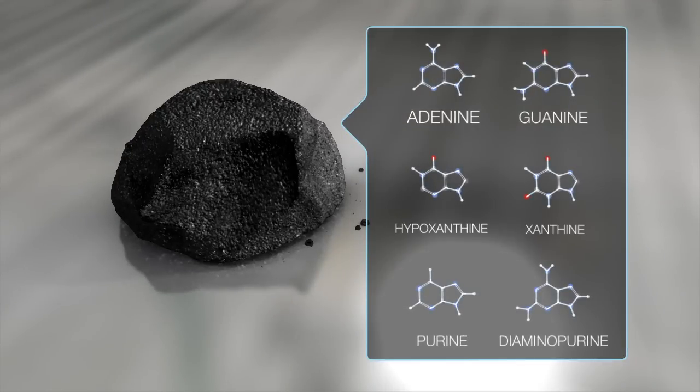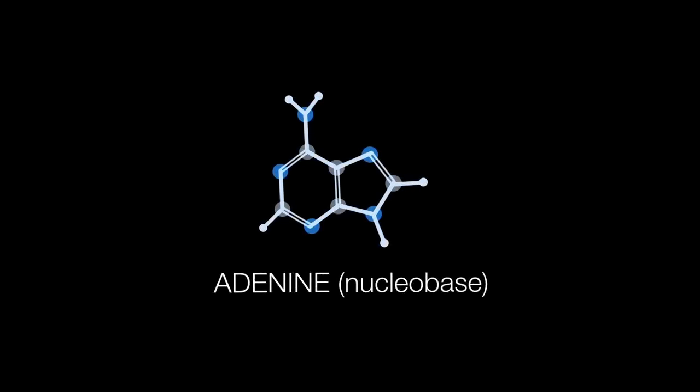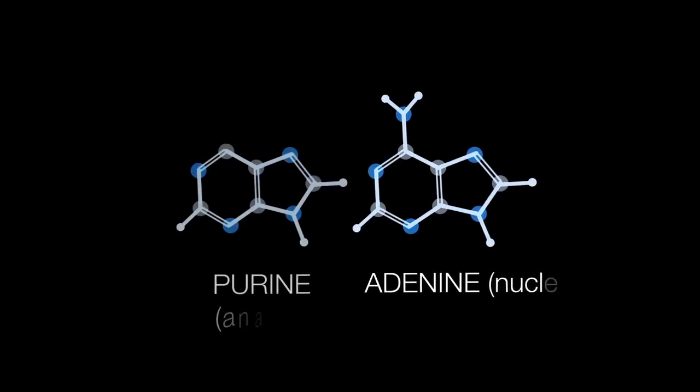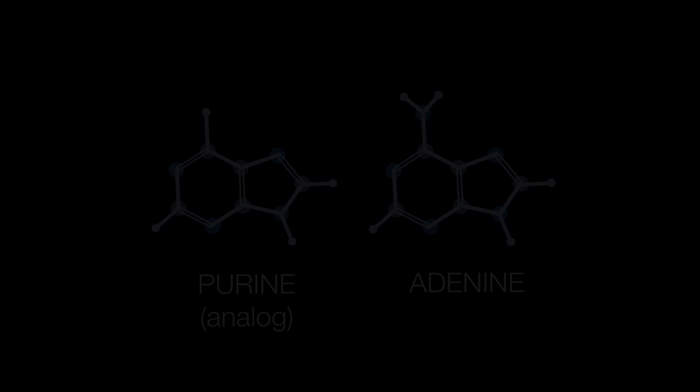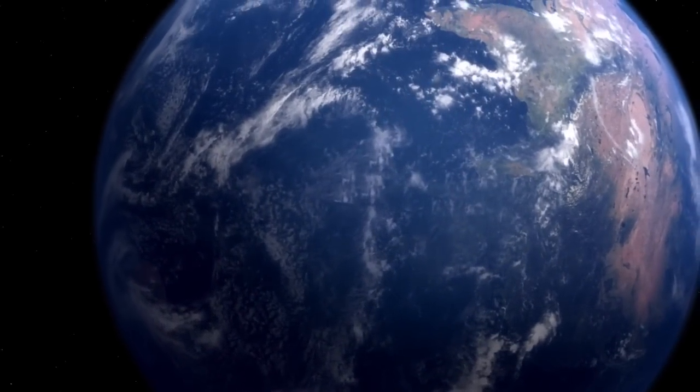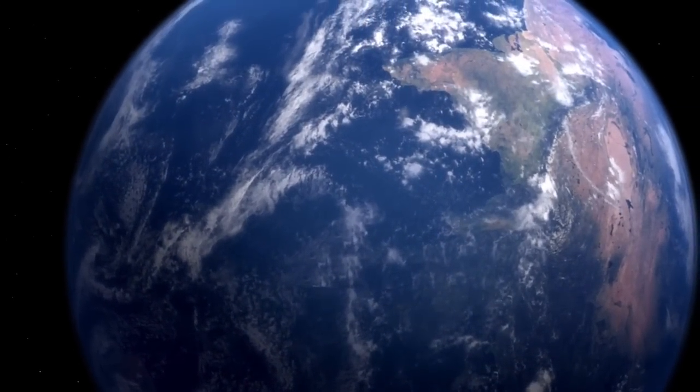We believe that these nucleobases in meteorites are extraterrestrial based on three reasons. The first is that we find nucleobase analogues in meteorites. A nucleobase analogue is a molecule that is structurally similar to the nucleobases you find in biology, but it's different. These structures are actually either rare or even absent on Earth.